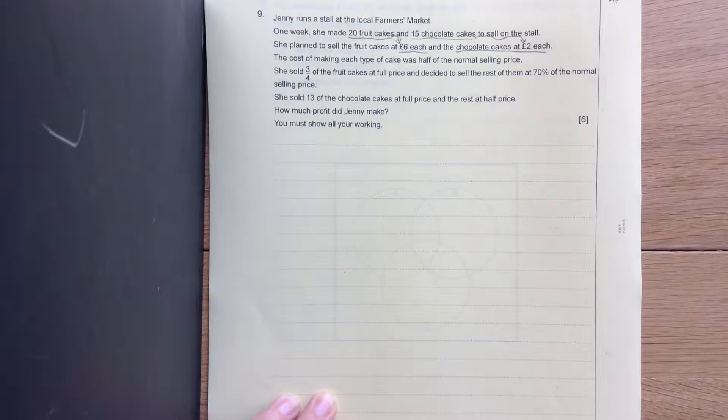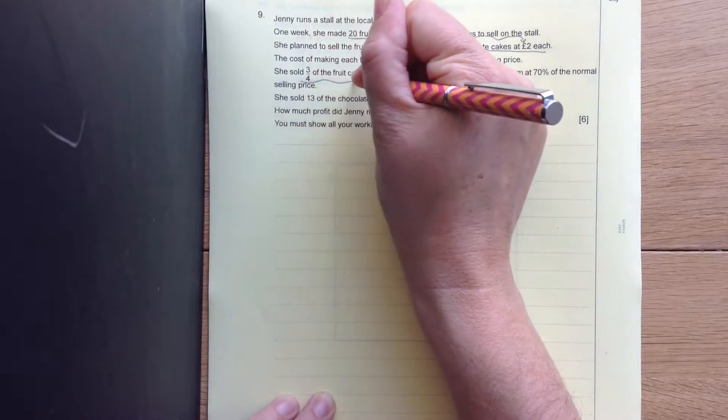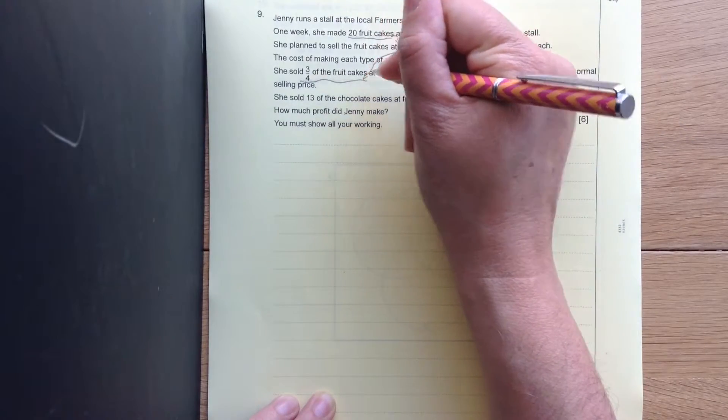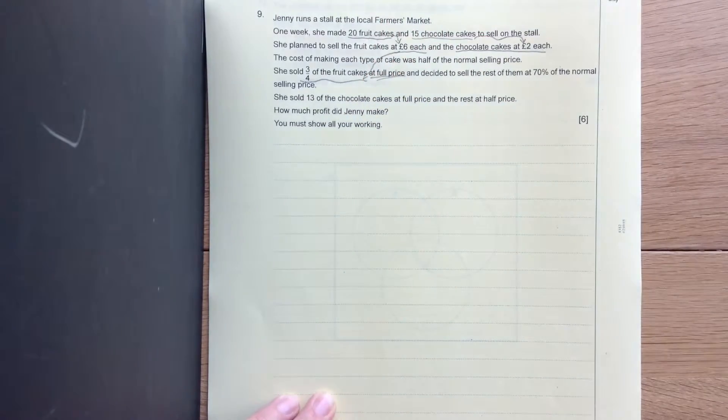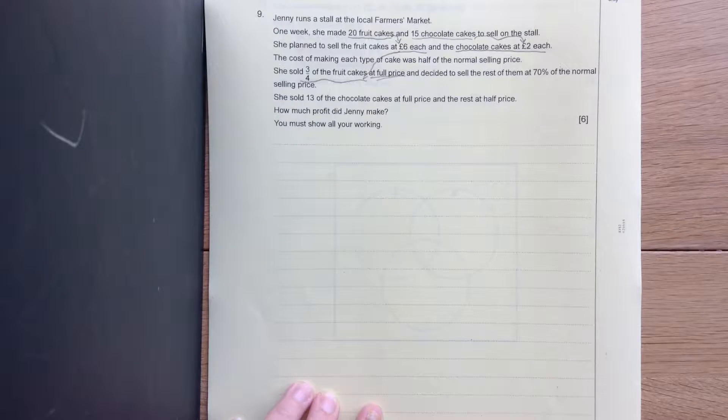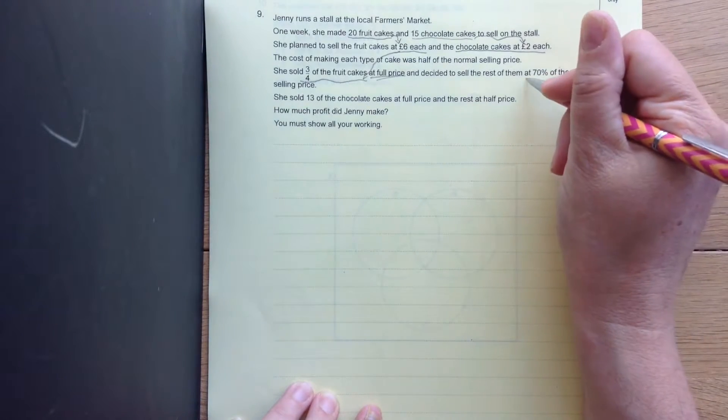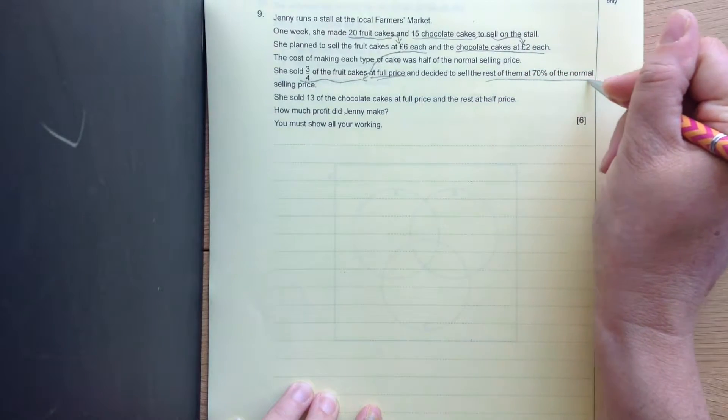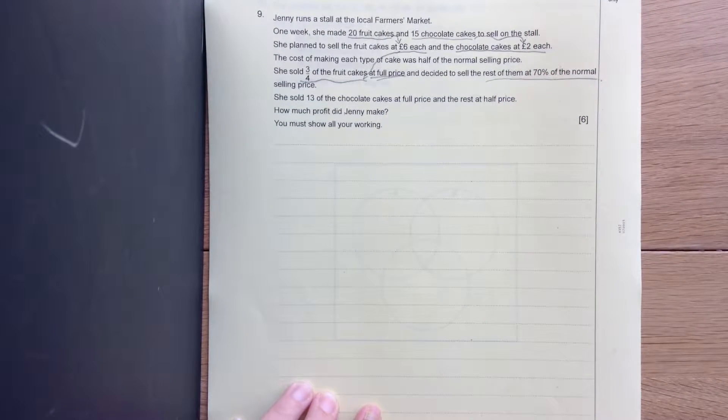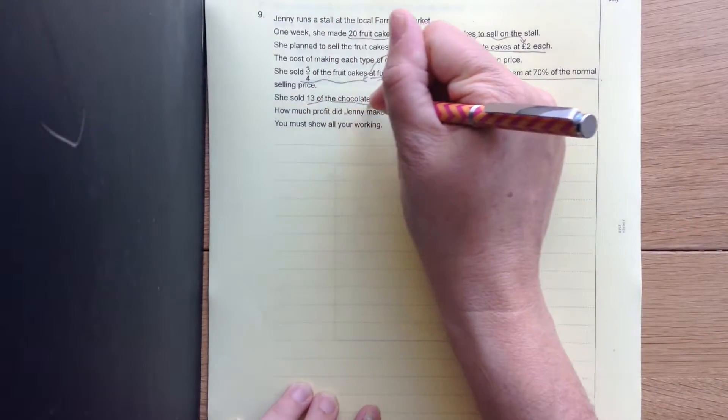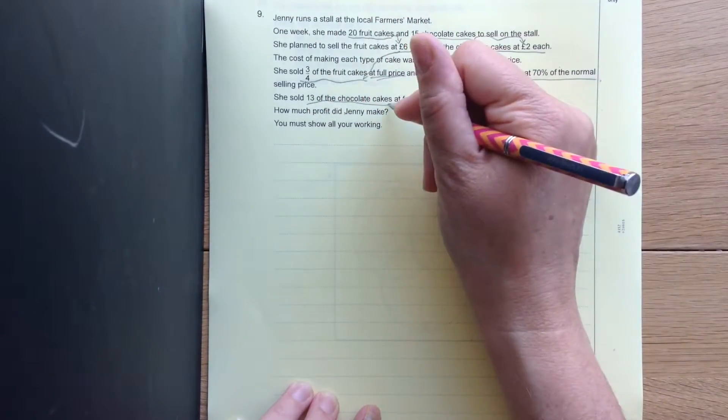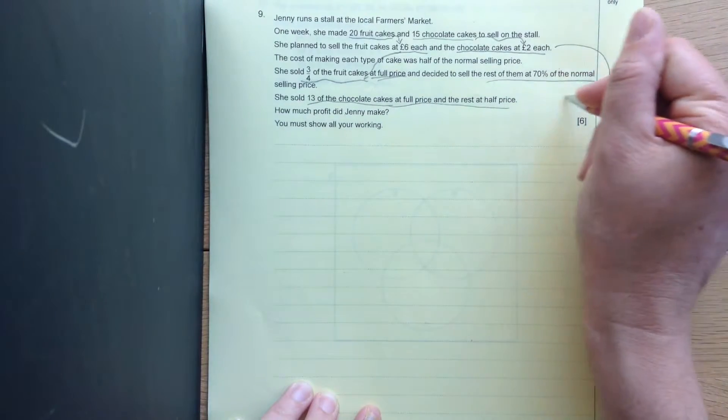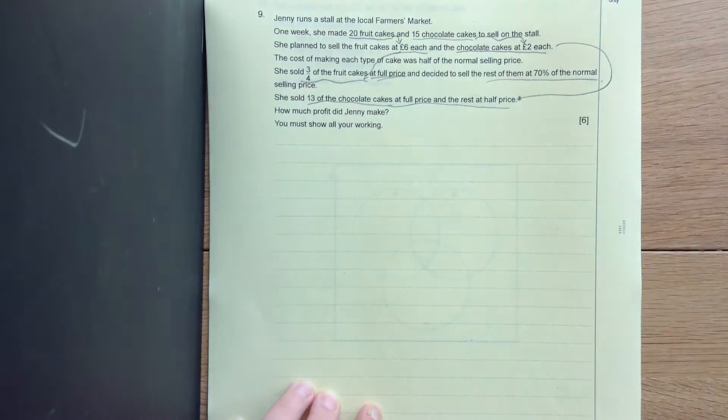The cost of making each type of cake is half the normal selling price. She sold three quarters of the fruit cakes at full price and decided to sell the rest of them at 70% of the normal price. She sold 13 chocolate cakes at full price and the rest of them at half price. How much profit did Jenny make? You must show all your workings.